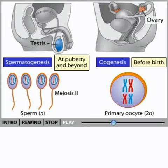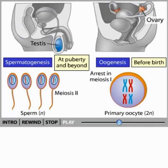In this way, millions of sperm are produced each day. In females before birth, the primary oocytes begin the process of meiosis. However, the cells stop the process during the first meiotic division.